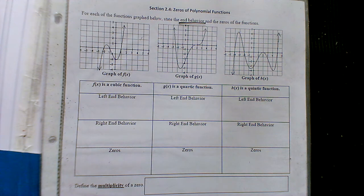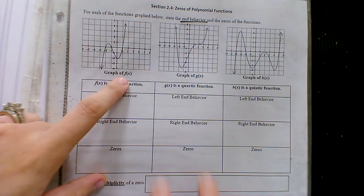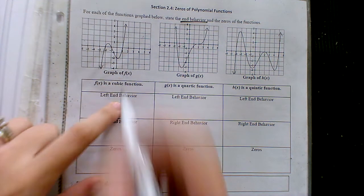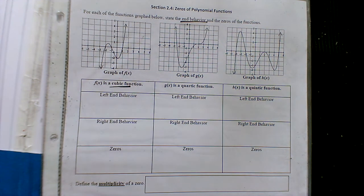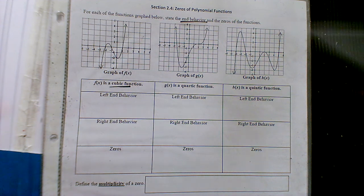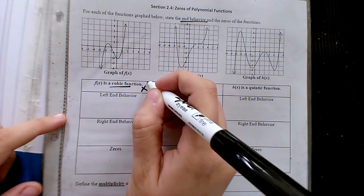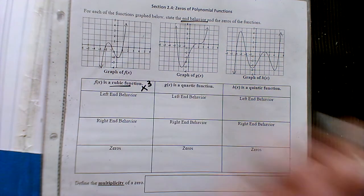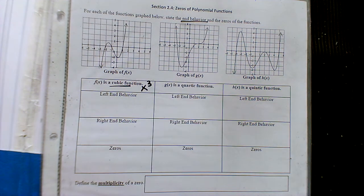We have three graphs to explore on this first page. We're going to start off with f of x, and they're telling us that it's a cubic function — it kind of has that S-shape to it. So we know that the highest power is 3, cubic meaning 3.